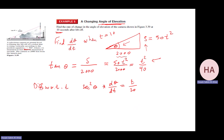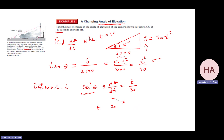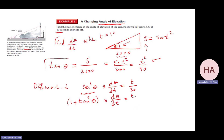We're done — the remaining step is to find secant squared, so dθ/dt = (t/20) · cos²θ. Or I can do a trick: since I know tan θ, I use the identity secant²θ = 1 + tan²θ. So I have (1 + tan²θ) · dθ/dt = t/20.